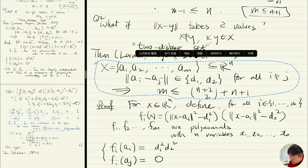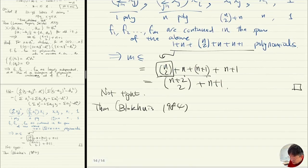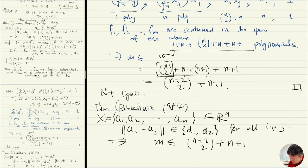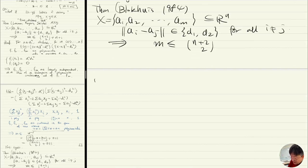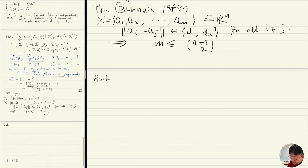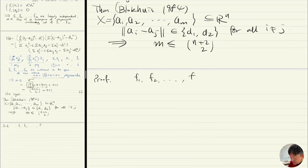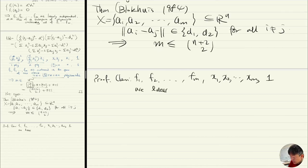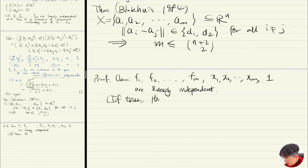So what's the idea? The idea is actually using the same construction. We already have f_1, ..., f_m which we know are linearly independent. But the claim is that they — together with x_1, x_2, ..., x_n and the constant polynomial 1 — are all linearly independent. That's the claim. How do we know?